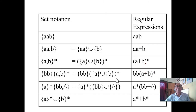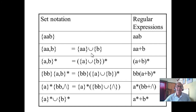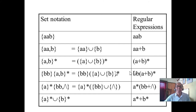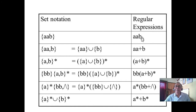Next example — set notation. I have covered set notation. This is a set notation; this is the expression — the bracket is not there. In regular expression, union is equivalent to plus. In set notation it is union; in regular expression it is plus. These are the rules I have to understand, because sometimes you have to minimize the regular expression.